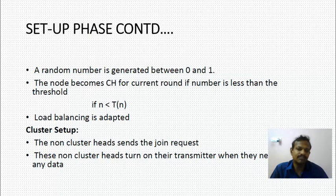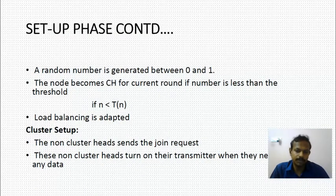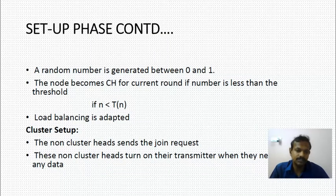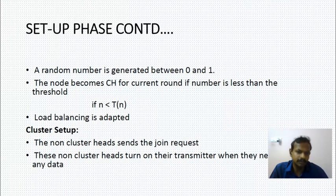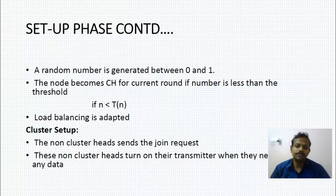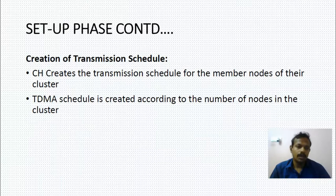Load balancing is achieved since every member gets an equal opportunity of becoming a cluster head. In the cluster setup sub-phase, non-cluster nodes send a join request to join a particular cluster. The non-cluster nodes turn on their transmitter only when they need to transfer data; otherwise they keep the transmitter in off mode to preserve energy.